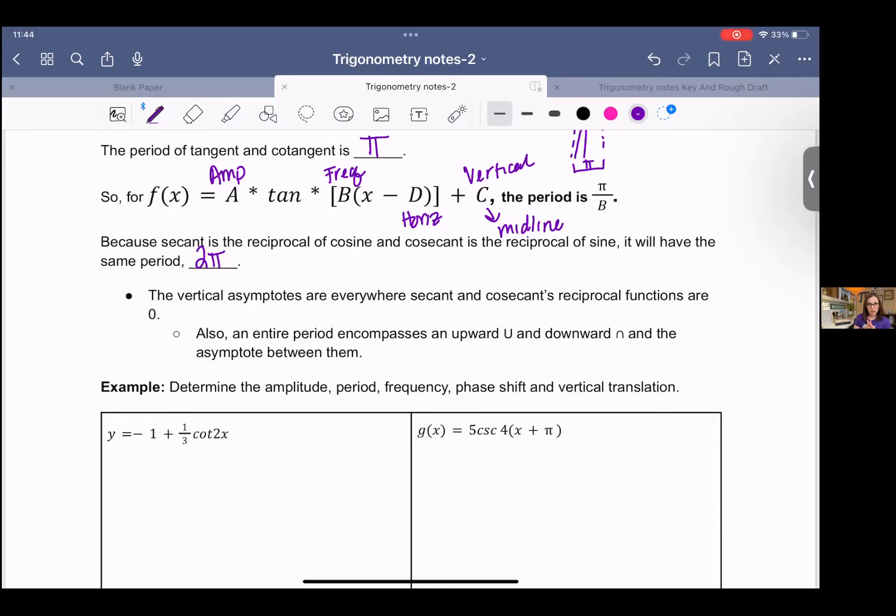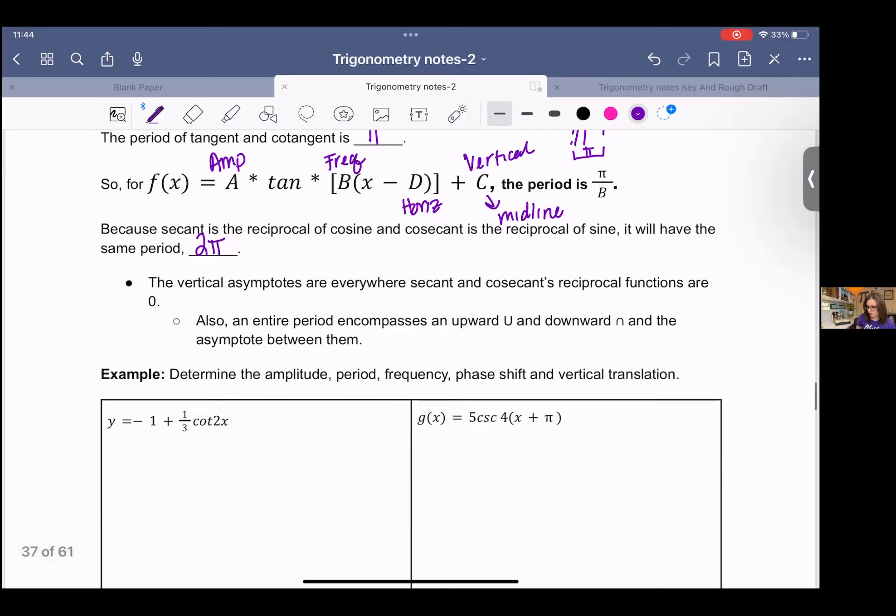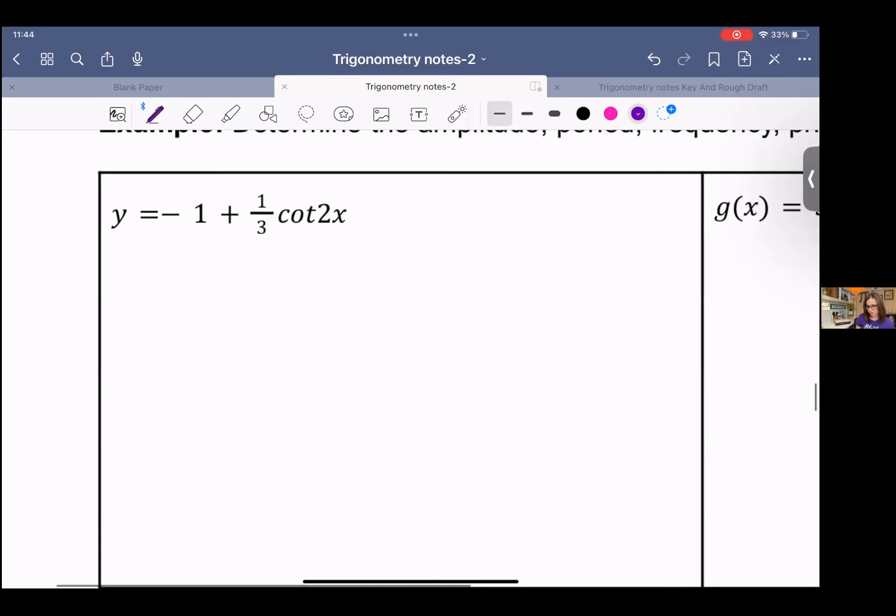So I have two examples here. We are not drawing them or sketching them. We're just stating the amplitude, period, frequency, phase shift, and vertical translation. So for this first example, we have cotangent. And so we need to consider the period for tangent and use that for cotangent. So this has, we can label this. This is going to be a vertical shift. This is going to be an amplitude. This is going to be a frequency. It doesn't look like there's going to be any horizontal shift because I don't have anything plus or minus inside of parentheses.